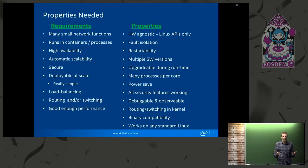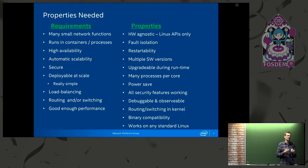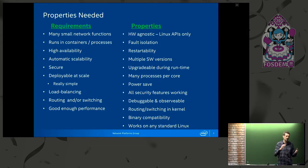Debuggable and observable: if you have one million nodes, it's really important it's debuggable and observable in the running system. You can't just insert GDB, stop the system, and single-step through your problem. It has to be debuggable and observable by runtime tracing. Routing and switching in the kernel for load balancing, and of course it has to be binary compatible and work on any standard Linux. If it doesn't work on any standard Linux, it's hard to be deployed at scale, because there are going to be so many different versions of Linux in this big system.